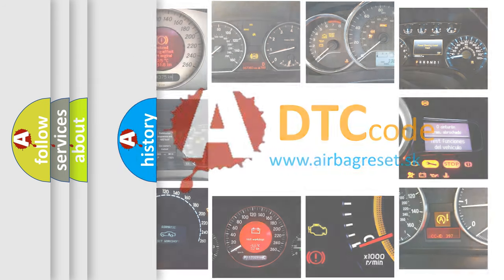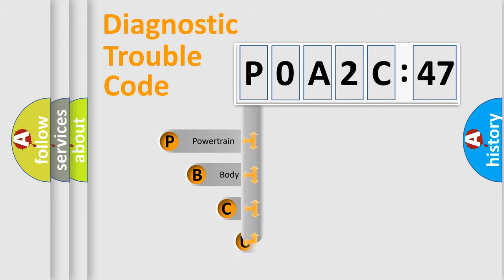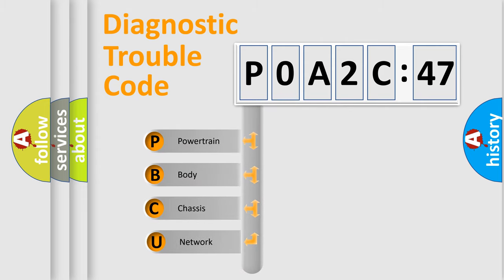We divide the electric system of automobile into four basic units: Powertrain, Body, Chassis, and Network. This distribution is defined in the first character code.